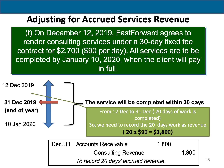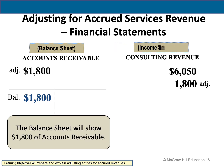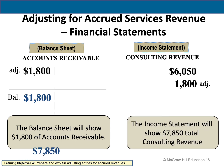Looking at the T-accounts: account receivable is increasing on the debit side with a balance of $1,800. Because account receivable is an asset, I record it on the balance sheet. Consulting revenue also increases on the credit side by $1,800, and I record the revenue in the income statement because income statement includes revenues and expenses. The total will be $7,820.